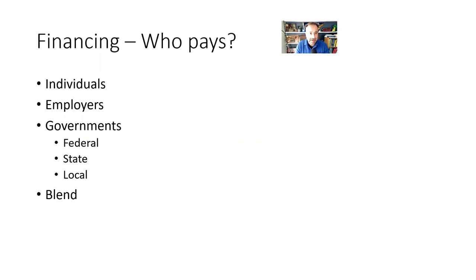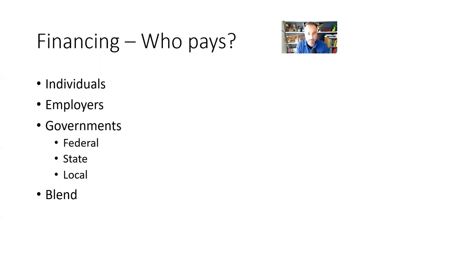So when we think about financing, I want to be really specific. In the quad model, financing has a specific meaning versus when we use the term in a loosey-goosey way — maybe it means payment, maybe it means who's actually bringing the cash to the table. In the quad model, when we say financing, we're really asking: whose pocket is the money coming out of? A pure market model would have a lot of individuals paying for their own care directly.